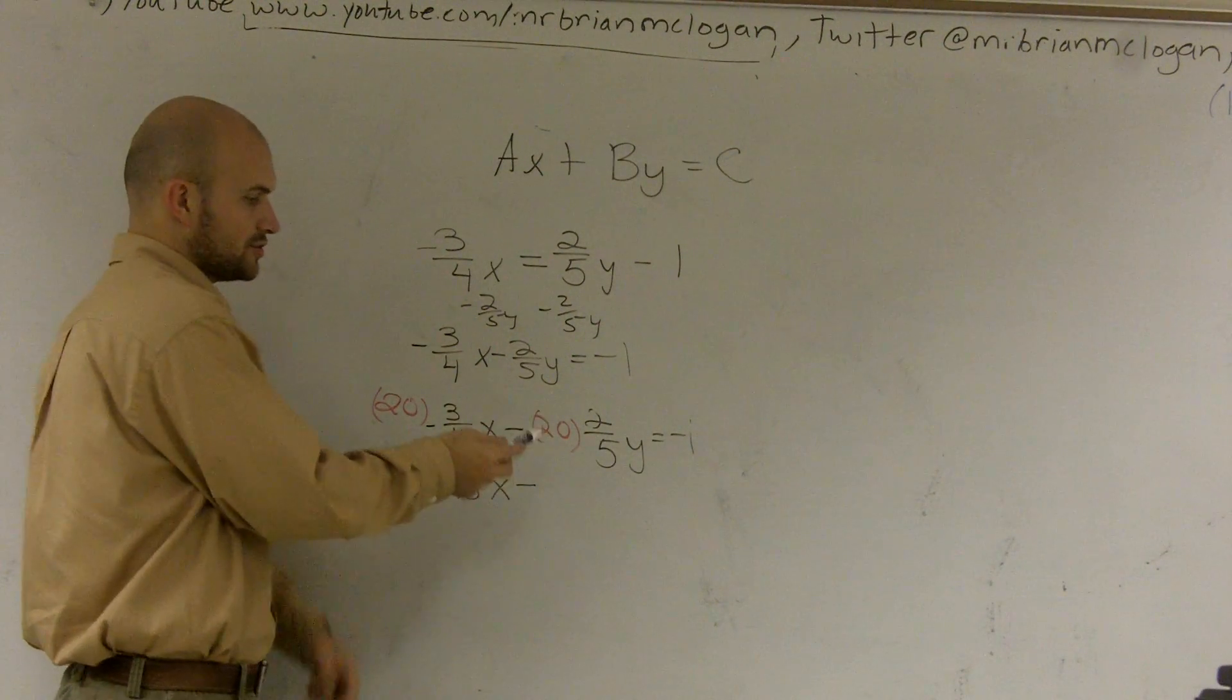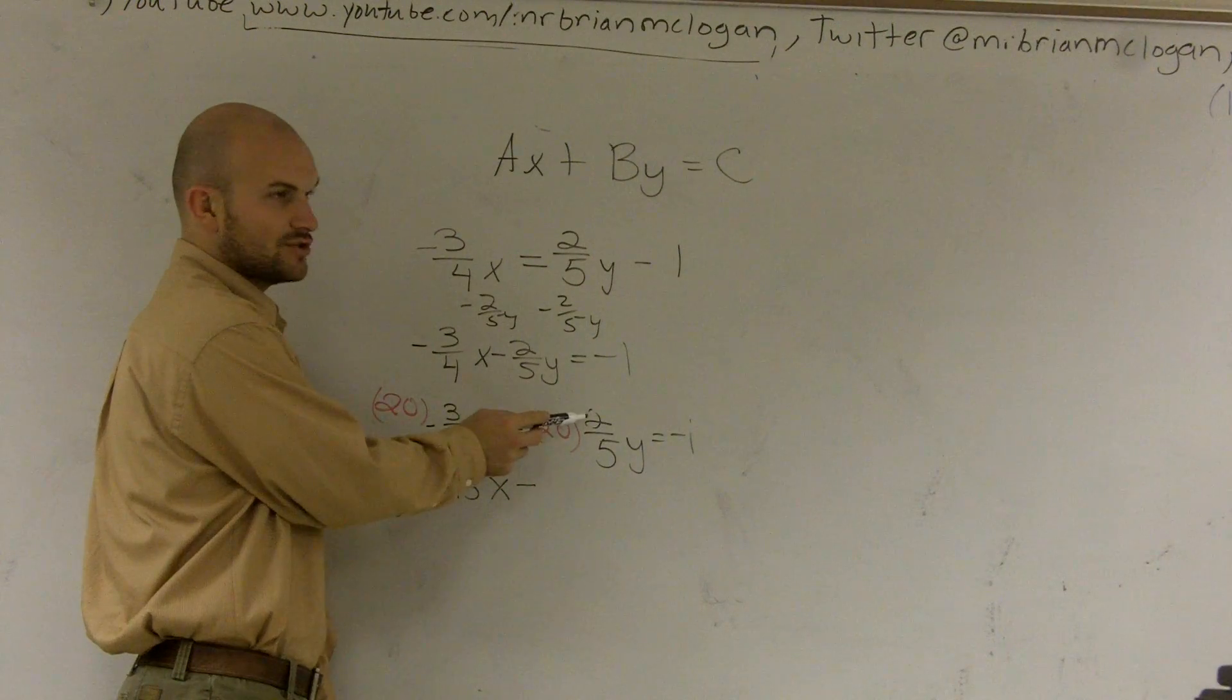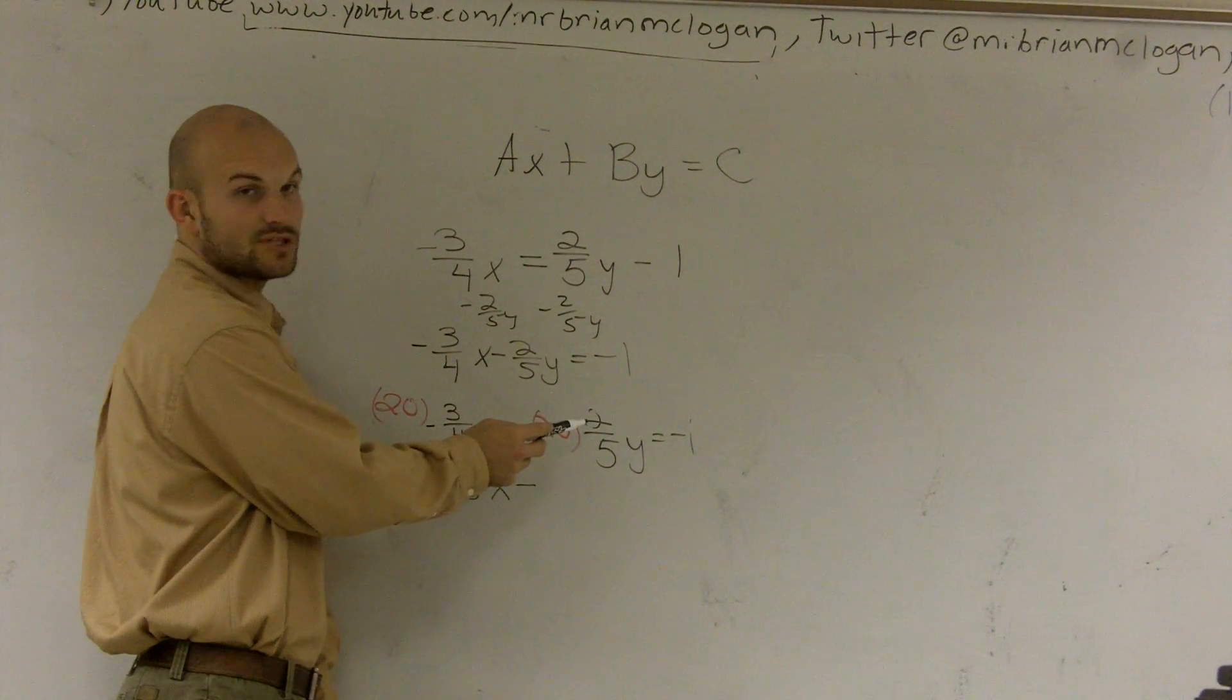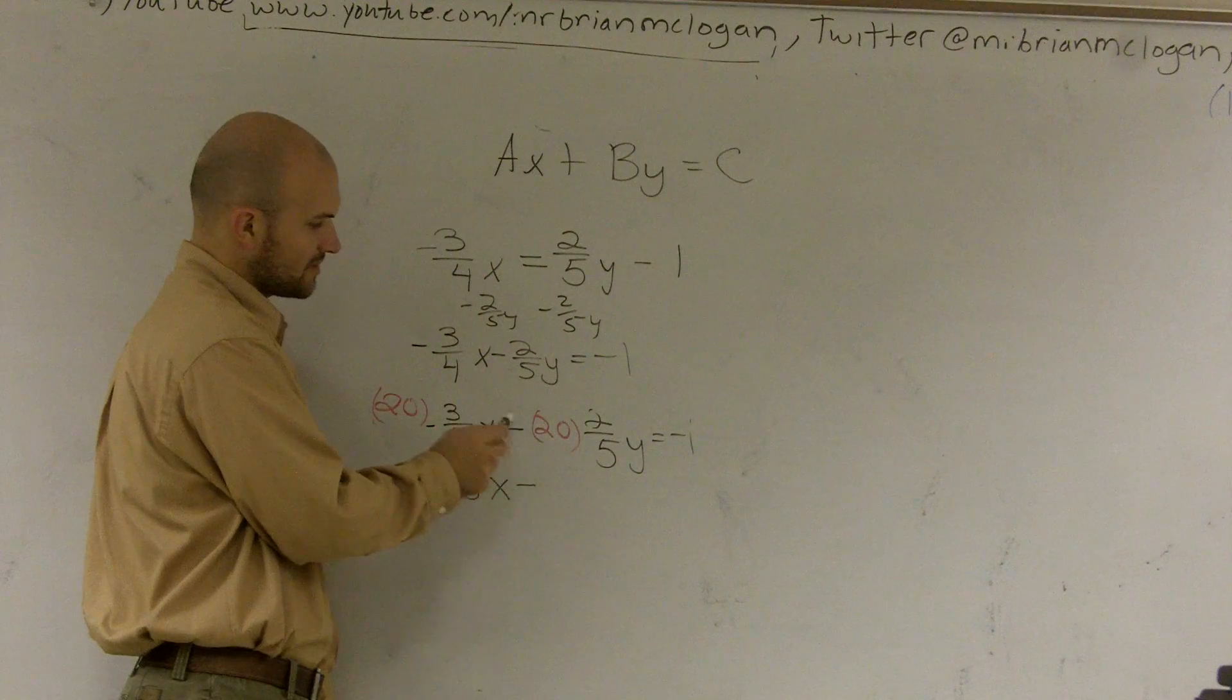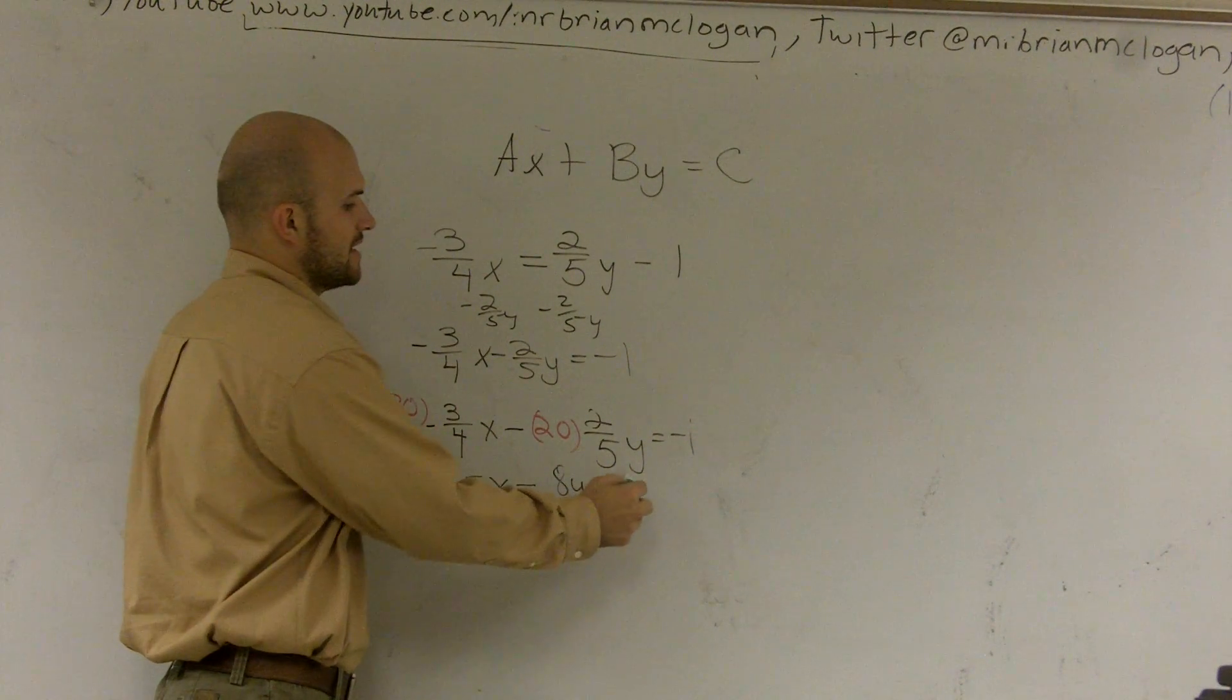x minus, again you can do it two ways. 20 divided by 5 is 4, 4 times 2 is 8, 20 times 2 is 40, divided by 5 is 8. Again, there's that negative sign, so you're going to get 8y equals negative 1.